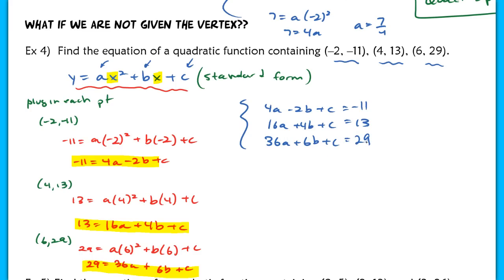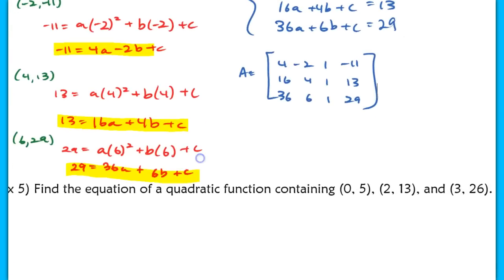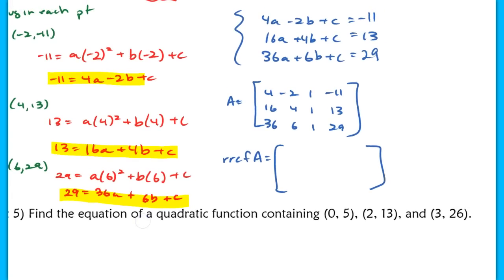We can solve this three-variable system using matrices. Set up matrix A with the coefficients: [4, −2, 1, −11 | 16, 4, 1, 13 | 36, 6, 1, 29]. On the calculator, go to Second Matrix and Edit, enter it as a 3×4 matrix with all the coefficients, then go to Second Matrix, Math, scroll down to RREF, and enter the matrix back in. Make sure you show this work even if you're using the calculator.